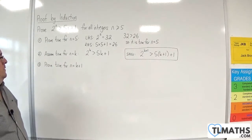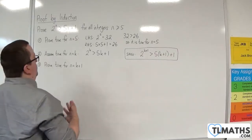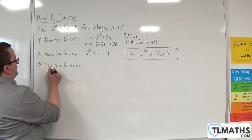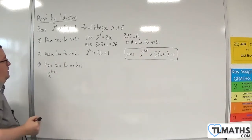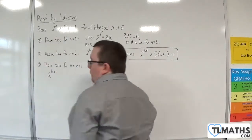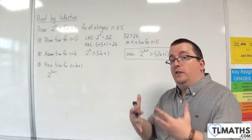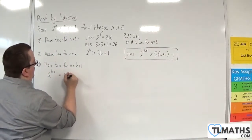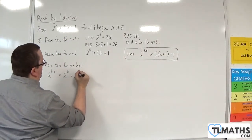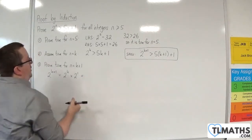So what I'm going to start off with is 2 to the k plus 1. So we'll start off with that. Now, I know that 2 to the k plus 1, using my indices, is 2 to the k times 2 to the 1. And of course 2 to the 1 is just 2, so that's 2 lots of 2 to the k.